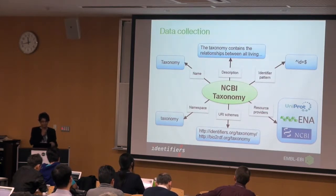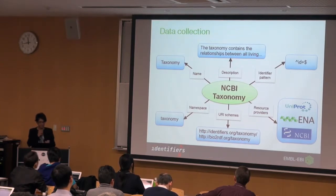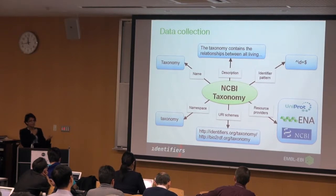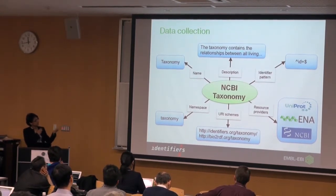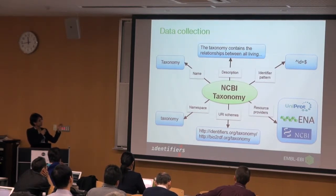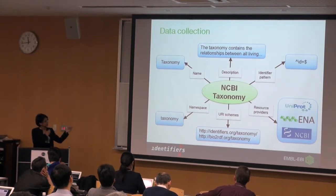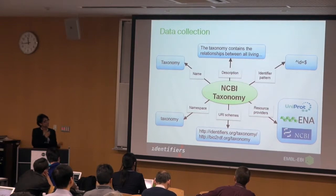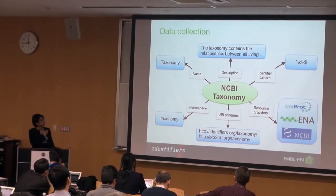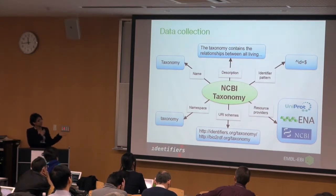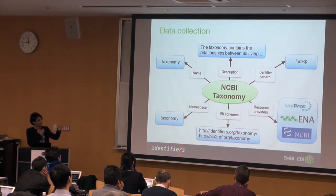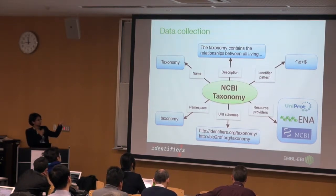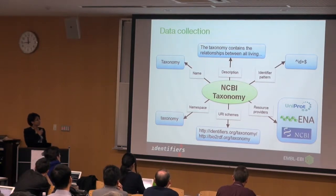For each of the data collections we store a bit more information. For example, if you take NCBI Taxonomy, we store the name, description, and the identifier pattern which is used to extract information. Each collection has a namespace — a short string; for NCBI Taxonomy it's 'taxonomy'. We also store different URI schemes that are available, literature resources, a short description, access URI, and if there is a primary resource — for NCBI Taxonomy it's NCBI — we store that information too.